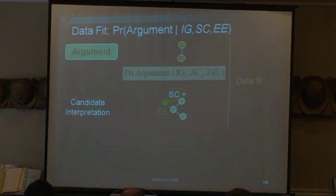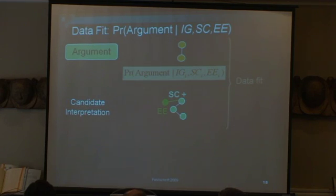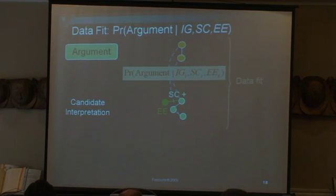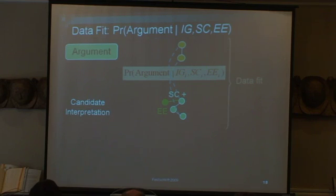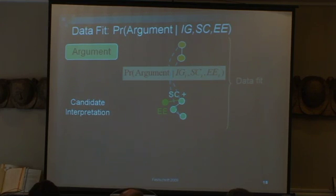For data fit, we have a candidate interpretation and we want to know how well it fits an argument. Again, we look at structure and belief. For structure, you ask: how much work do I need to do to convert the interpretation to match the argument — essentially edit distance. For belief, you ask how close the match is between what was said and what I obtained by Bayesian propagation. From those, I get the probability for data fit. So these are the main elements of the model.